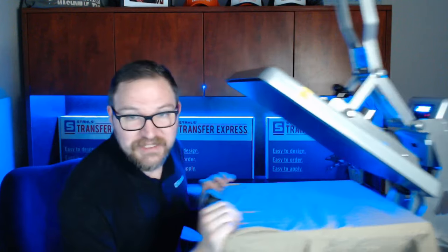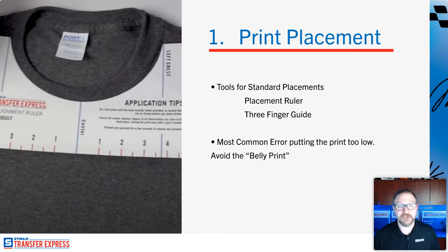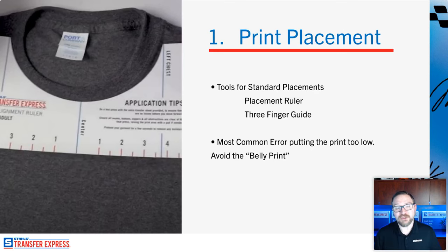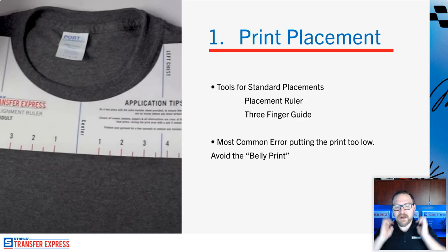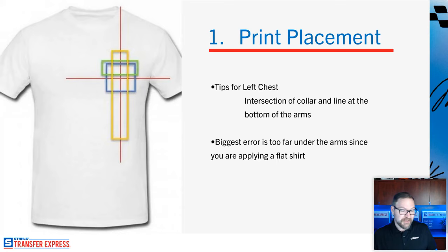When I was first decorating apparel, I was putting left chest prints up too high or on the belly, or even in the armpit. After 15 years decorating, I usually eyeball it and gauge based on where the seams are. If I'm holding the garment where the sleeve meets the side seam on either side, my center chest print is not going lower than that. Otherwise it's going to go on the belly. The sleeves meeting the garment is where that line is on me — I want that center chest print on the chest, not the belly.